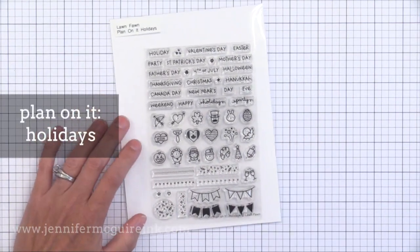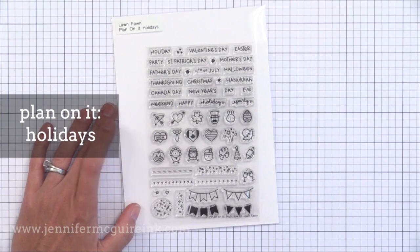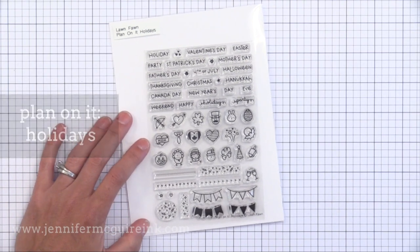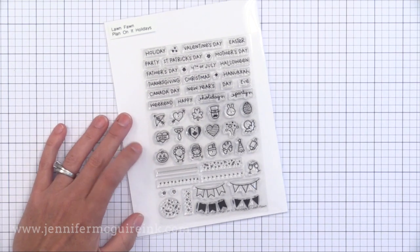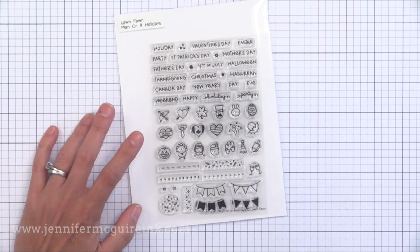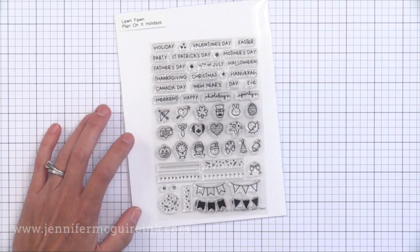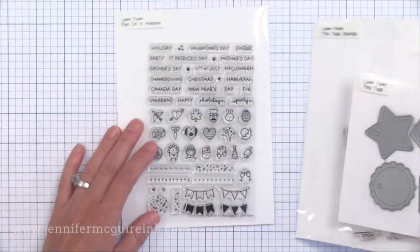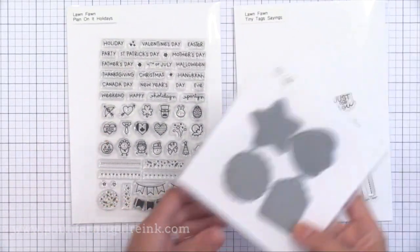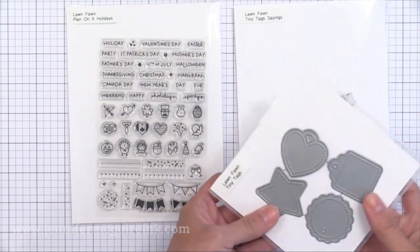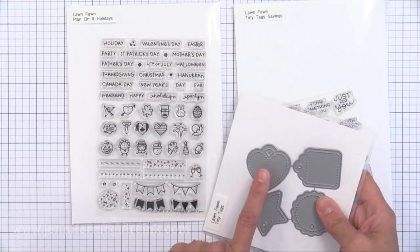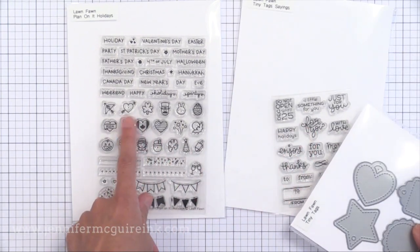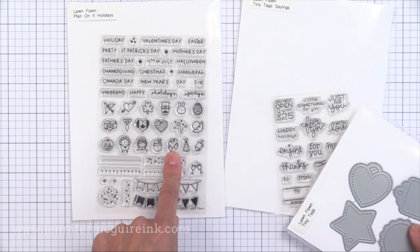Here we have Plan On It Holidays. Lawn Fawn has some Plan On It stamp sets that are perfect for planners. This is the holiday version. Everything's really well thought out again with perfect spacing for planners. I think this would be fun to team up with that tiny tag saying stamp set I showed you earlier and stamp the little images on the tiny tags themselves. So you can do little tags for any holiday using the little holiday icons in this Plan On It Holidays stamp set. That's one of the greatest things about Lawn Fawn stamps.